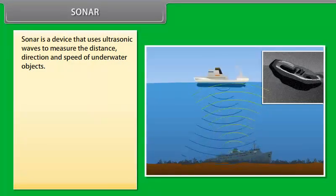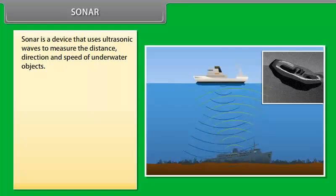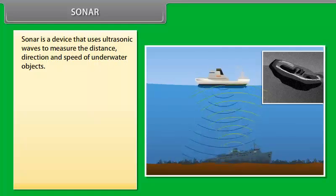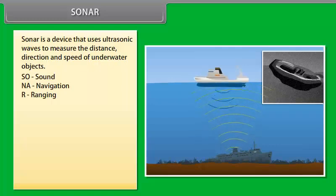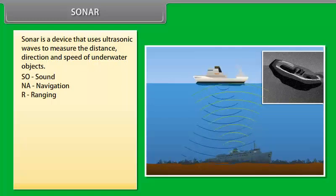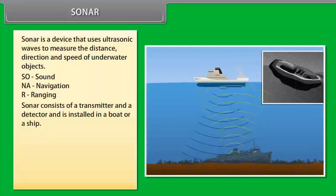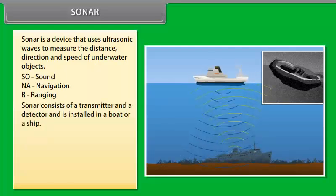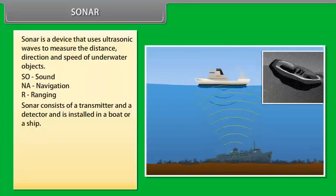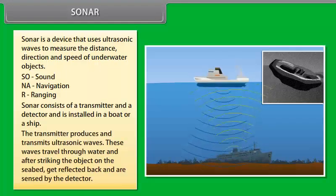Ultrasounds can be used to detect cracks and flaws in metal blocks. Ultrasonic waves are allowed to pass through the metal block and detectors are used to detect the transmitted waves. If there is even a small defect, the ultrasound gets reflected back indicating the presence of the flaw or defect.